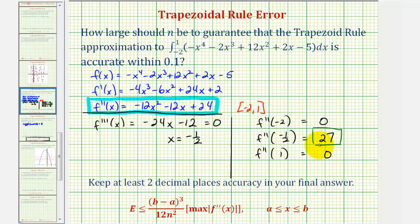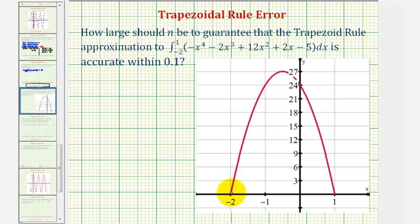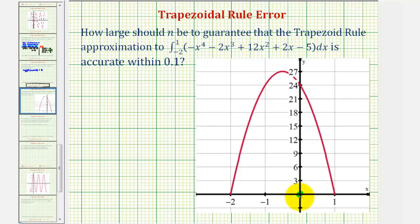Let's verify this graphically. Here's the graph of the second derivative function on the closed interval from negative two to positive one. Notice that at the endpoints the function value is zero, and at x equals negative one-half we have our vertex. The y-coordinate, or function value, is positive 27. This verifies our work.